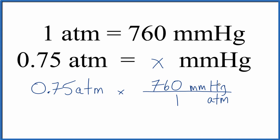Now we'll multiply the top divided by the bottom. Atmospheres cancels out. We're left with millimeters of mercury. So if you multiply 0.75 times 760, you get 570 millimeters of mercury. That's what we found before. 0.75 atmospheres equals 570 millimeters of mercury.